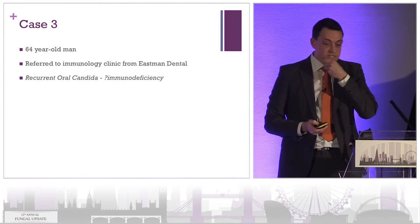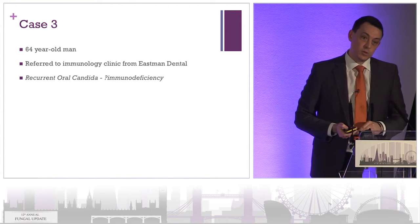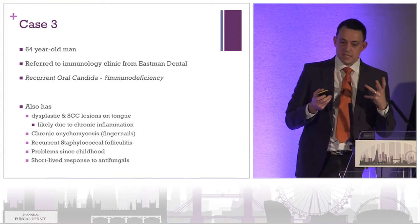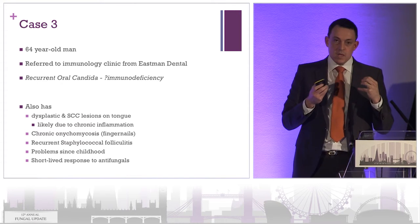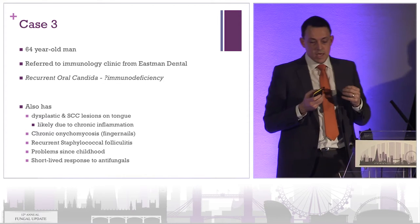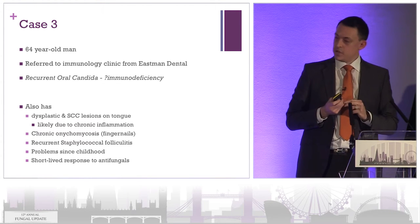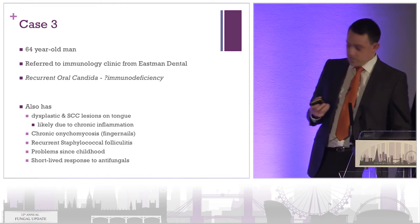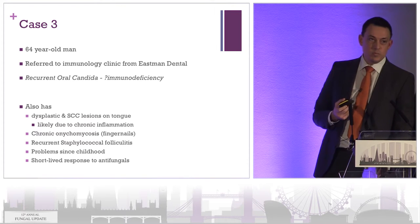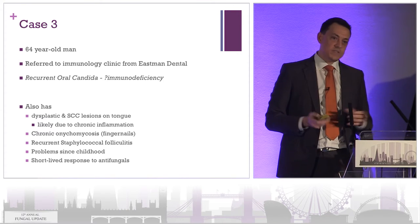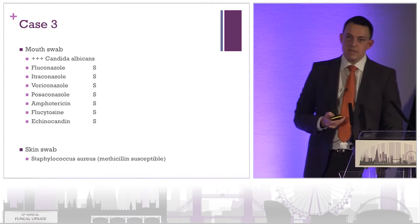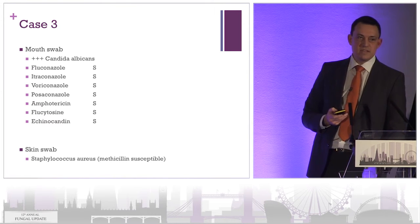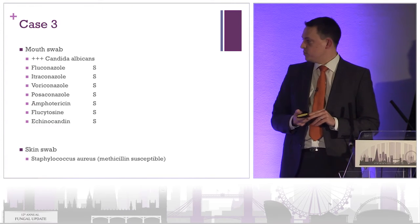Case number three: a 64-year-old man, again referred from the Eastman Dental Hospital with recurrent oral candida, query immunodeficiency. His mouth was in a terrible state — he had had multiple dysplastic and SCC lesions, thought to be because of chronic oral inflammation. He had chronic fingernail onychomycosis and also recurrent staphylococcal folliculitis. Again, problems since childhood. He got fed up taking antifungals and stopped taking them because they didn't really do very much. His skin swab grew Staph aureus.